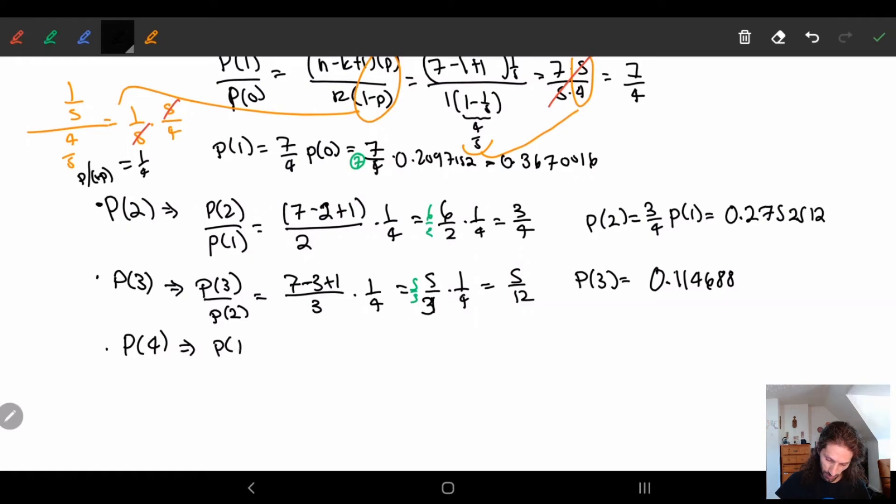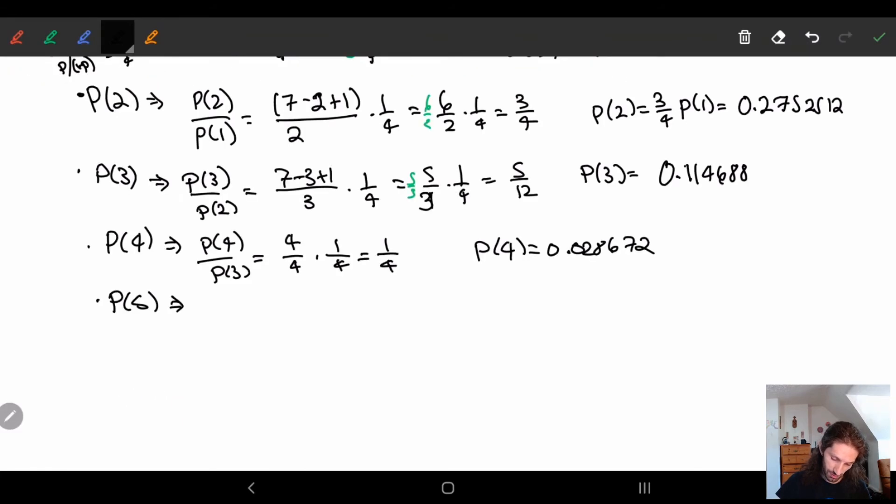P of four. So we have p of four over p of three. This is, again, we're going to get four over four. So I can just skip this. I can just do four over four times one-fourth. So we get one-fourth. This implies p of four is equal to 0.028672. Calculators were the best invention of humanity. God. Could you imagine trying to do this by hand? People used to do this by hand. They had no lives, I'm telling you.